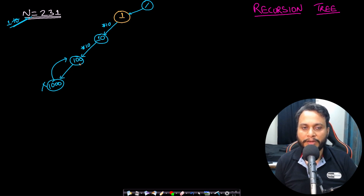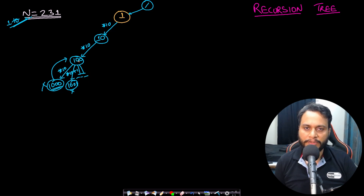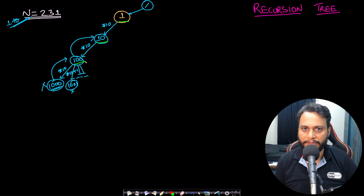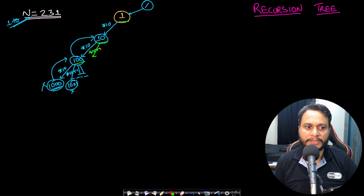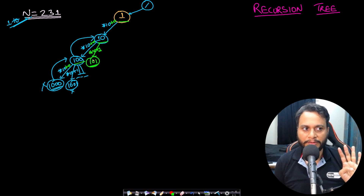From 100, multiplying by 10 gives 1000 which is out of range, and multiplying by 10 plus 1 gives 1001, also out of range. So we backtrack from 100. Back at 10, the next number is 10×10+1 = 101. So 101 is the fourth number in order: 1, 10, 100, 101.